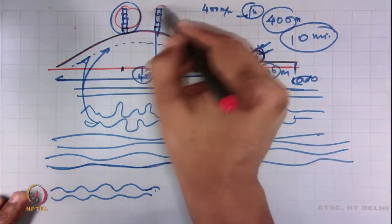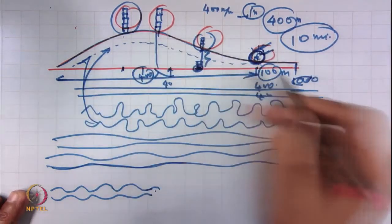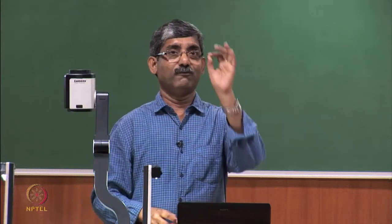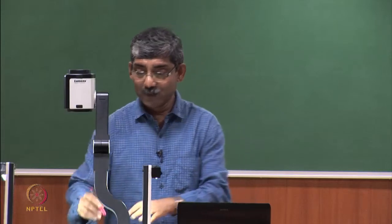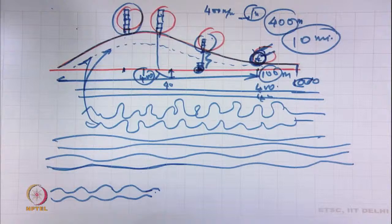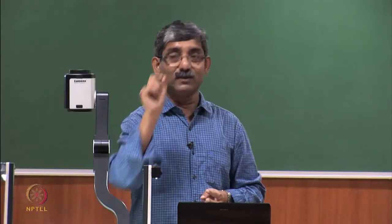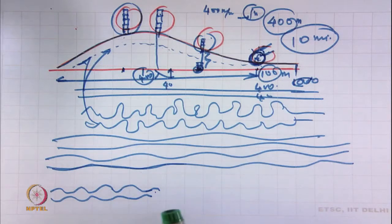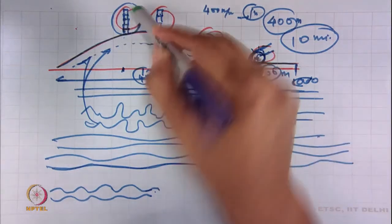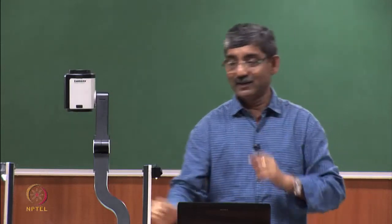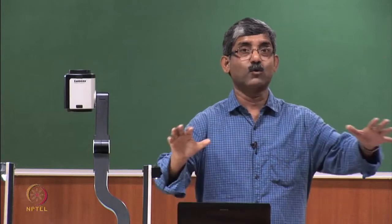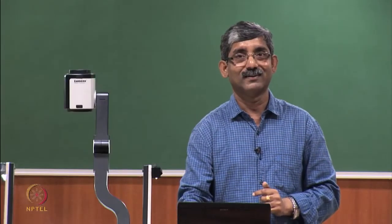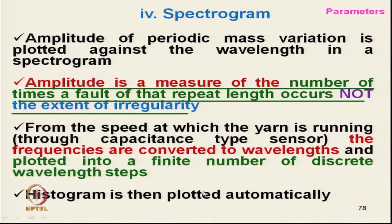The base curve of the spectrogram is not about variation — it is essentially an equation. If you run a perfectly uniform filament yarn, you get this base curve. The spectrogram only calculates wavelength and counts occurrences of periodicity above this base curve. The spectrogram is essentially a histogram plotted automatically into finite discrete wavelength steps.